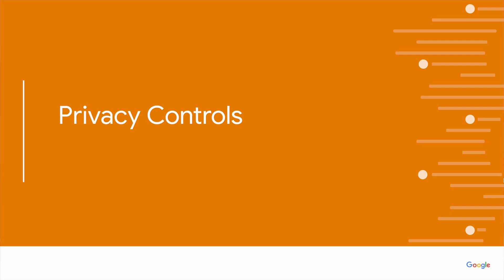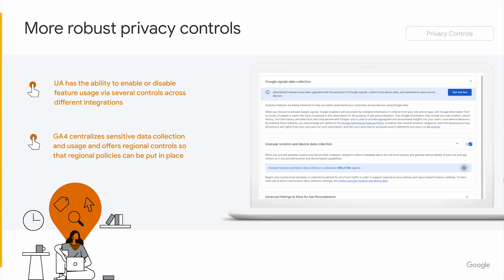Lastly, we'll cover privacy controls. The difference between UA and GA4 is basically the granularity of control. UA does have privacy controls — you can turn on and off the collection of information and its sharing. However, in Google Analytics 4 we took it one step further. Not only can you choose what data is collected, you can choose the region in which that data is collected — specifically referring to Google Signals. Additionally, in terms of linking and sharing data with activation and advertising tools, you can choose which regions pass data to those systems. So on both the collection side and the activation side, you can control very granularly at the region level what data is used for behavioral or advertising purposes — enabling different regions to operate differently based on local regulations.